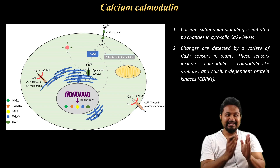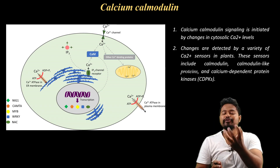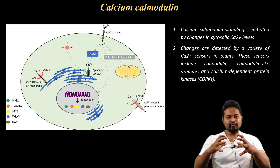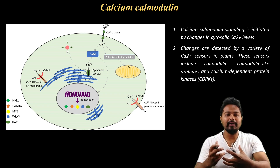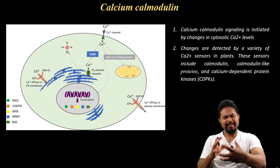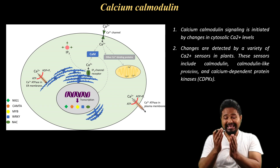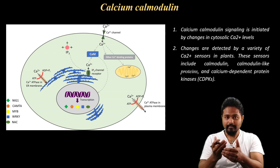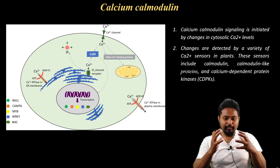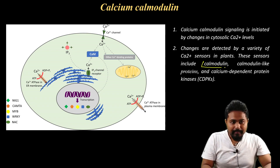First, I am going to talk about calcium-calmodulin and MAP kinase cascade. So, calcium-calmodulin — what are we doing? We are looking at stress, cell differentiation, and response. We are studying how calcium can change the cell. So, calcium and matter can change the cells. The sensors involved are calmodulin, calmodulin-like proteins, and calcium-dependent proteins.